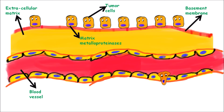Extravasation is basically the squeezing out of the tumor cell from the blood vessel into a new secondary site where it will spread. After this extravasation process occurs, it binds to the other side and the process is completed — the tumor cell has successfully reached from a primary site to a secondary distant site, and the route provided for this transfer was the blood vessel.